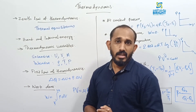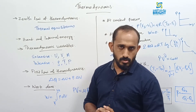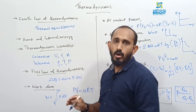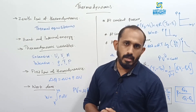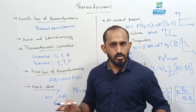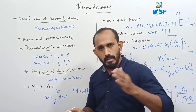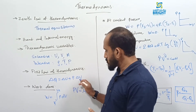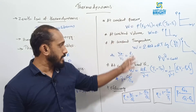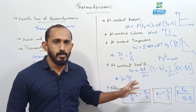Delta U, the change in internal energy, depends only on temperature. So in an isothermal process, delta U = 0. Delta U can be positive, negative, or zero based on temperature change. Work done by the system is positive; work done on the system is negative because volume can increase or decrease. Work done in each thermodynamic process — be thorough with these equations as they help solve numerical questions.